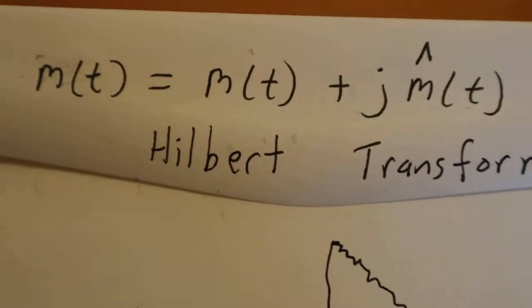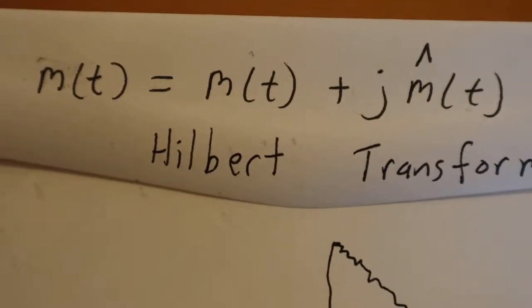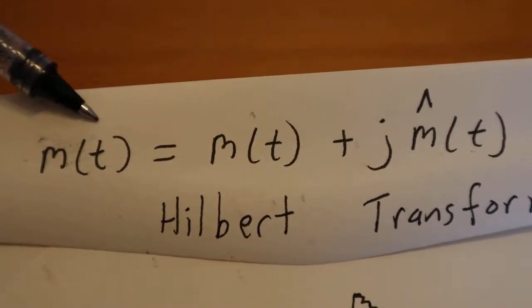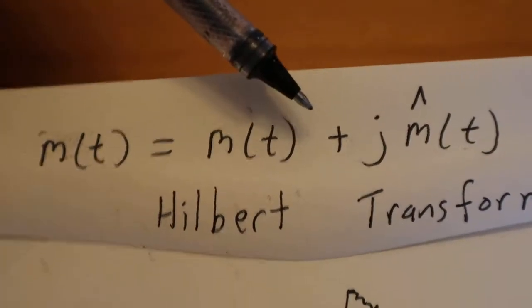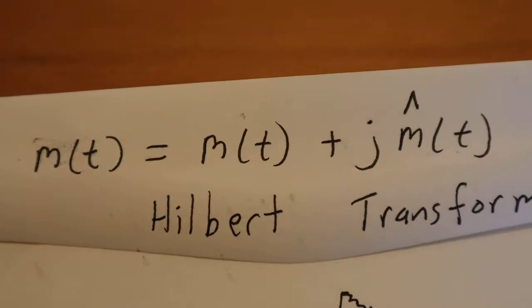Well, the answer is right here. It's called the Hilbert Transform. So here's the message signal, M of t, it's got a real part, and then this complex part, called M hat.